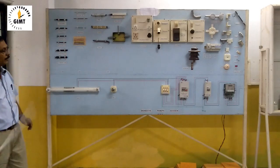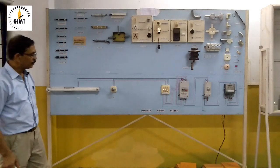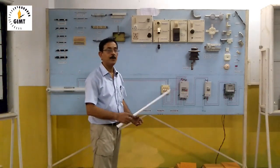So this is the domestic wiring components or items we are using. Now, come to the domestic wiring system layout. How we are doing this?